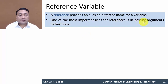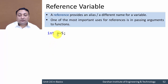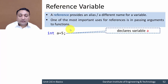One of the most important uses for references is in passing arguments to functions. Let us understand this with an example. Here we have variable 'a' holding the value 5. If we want to give a different name for variable 'a', we can use a reference variable.